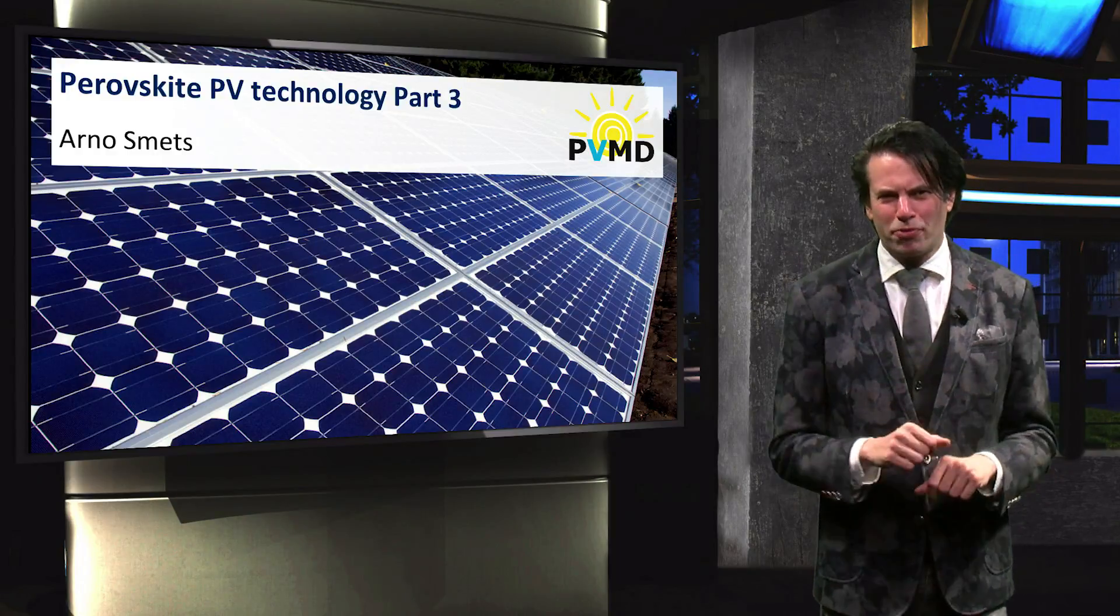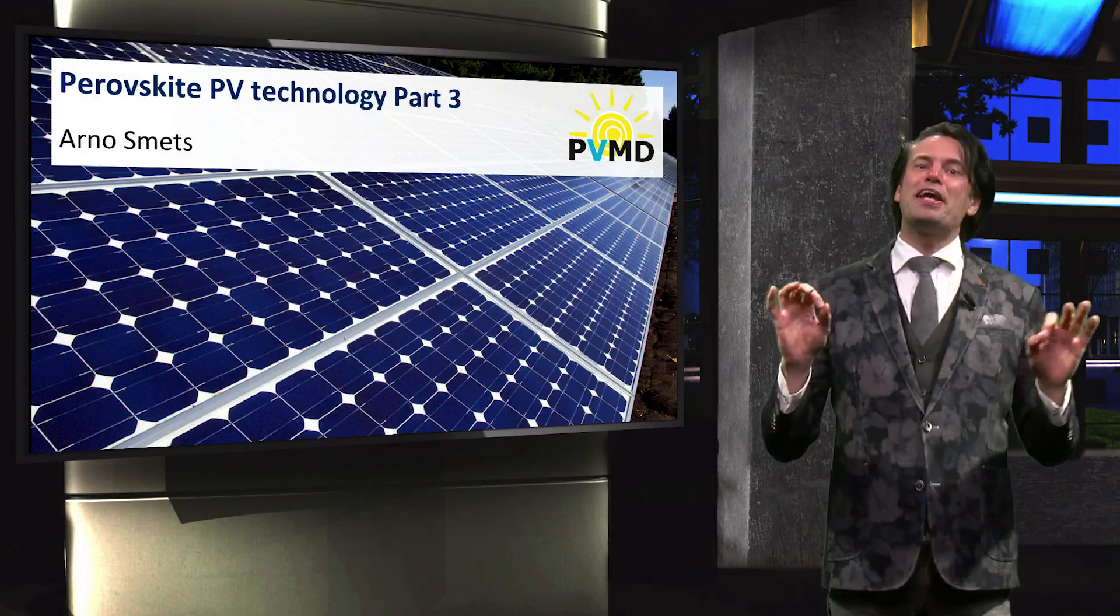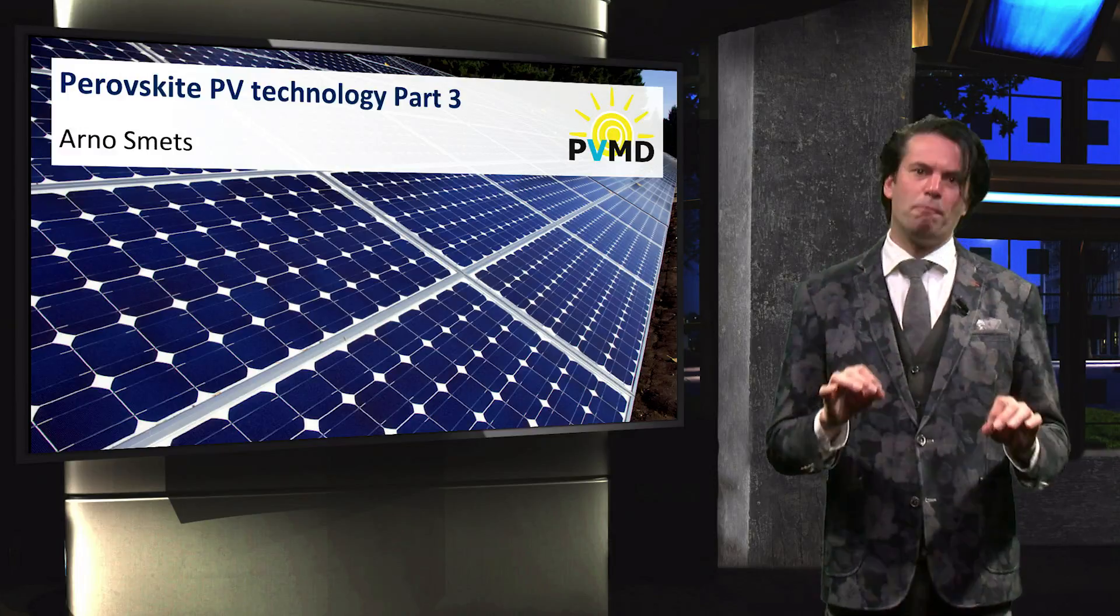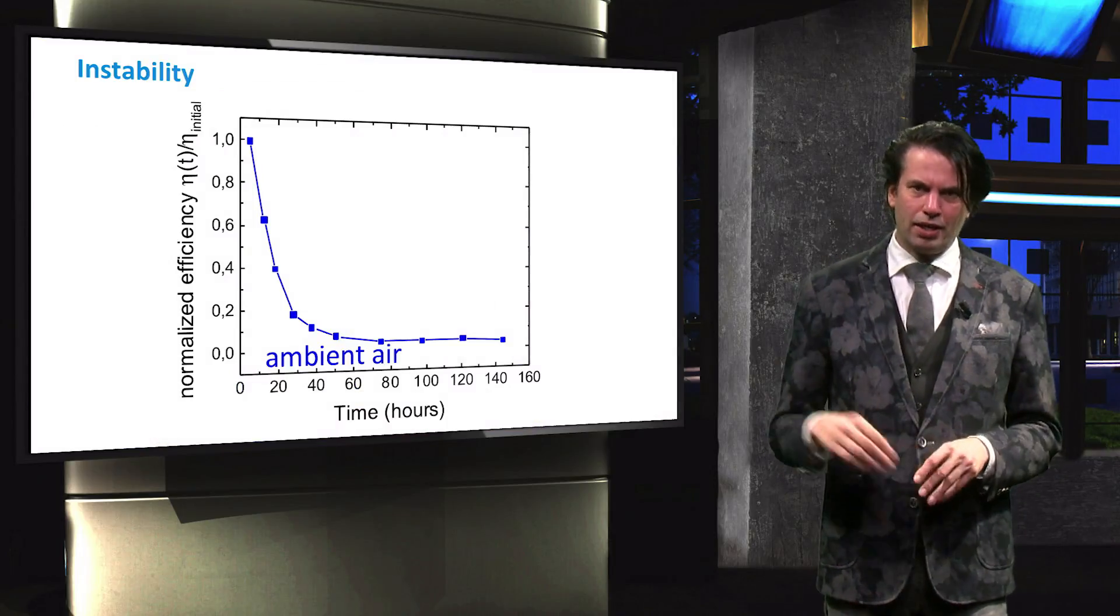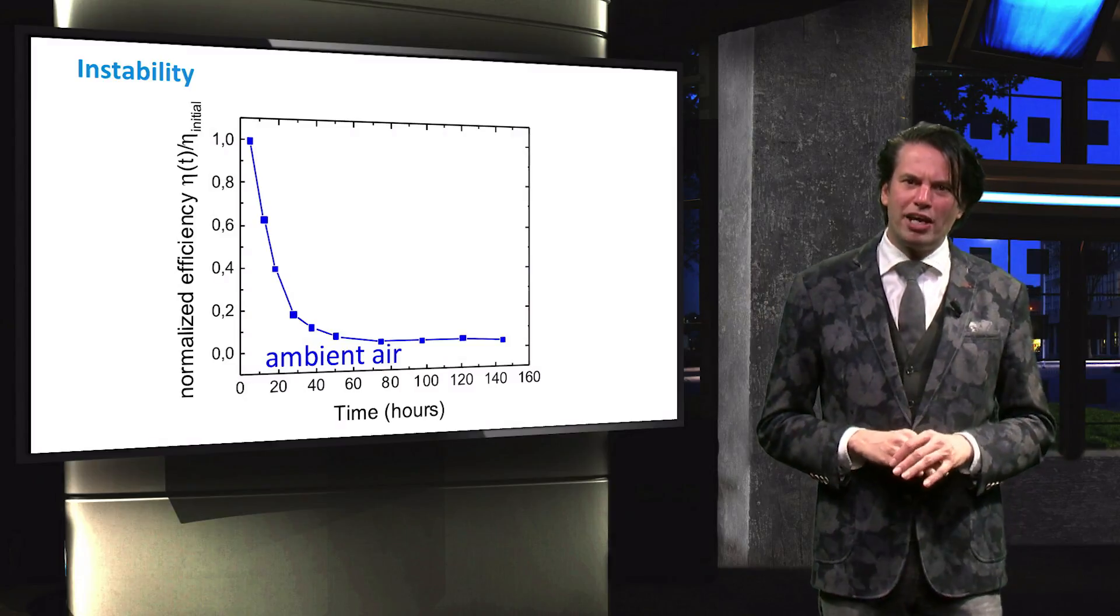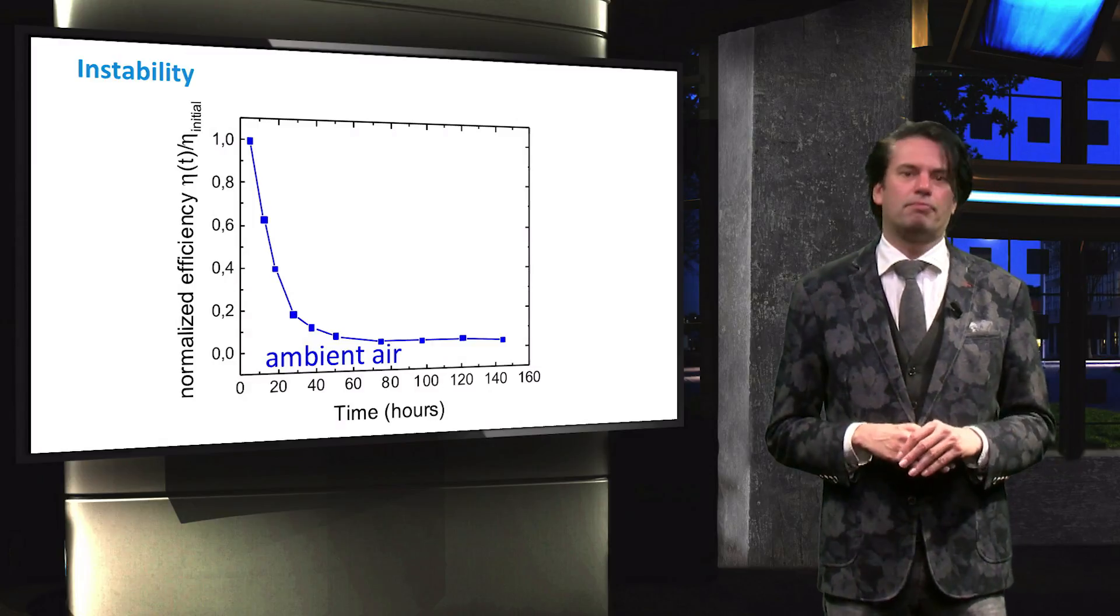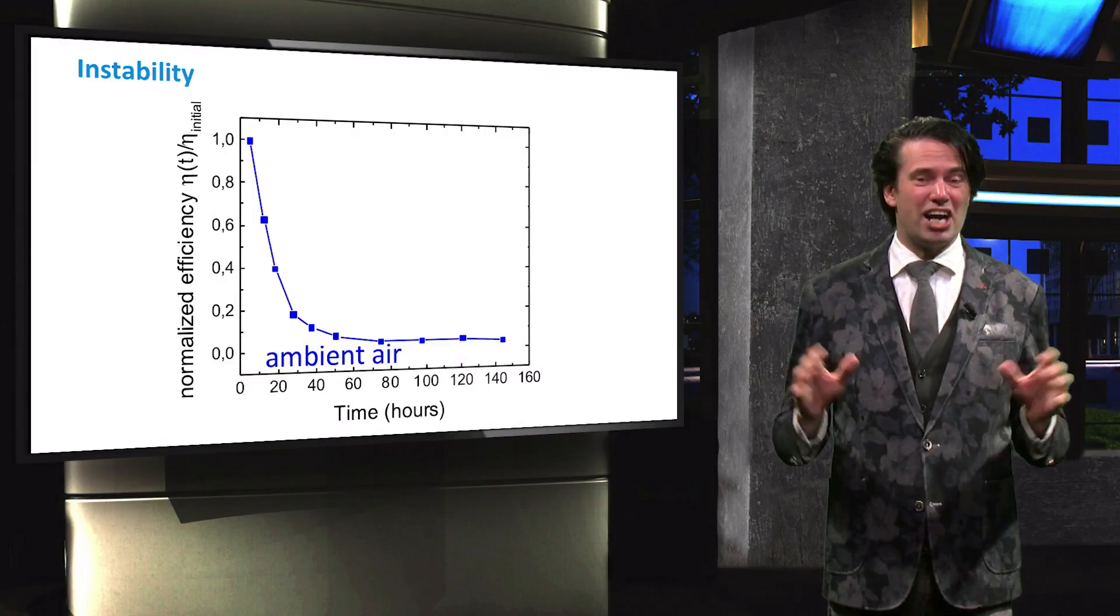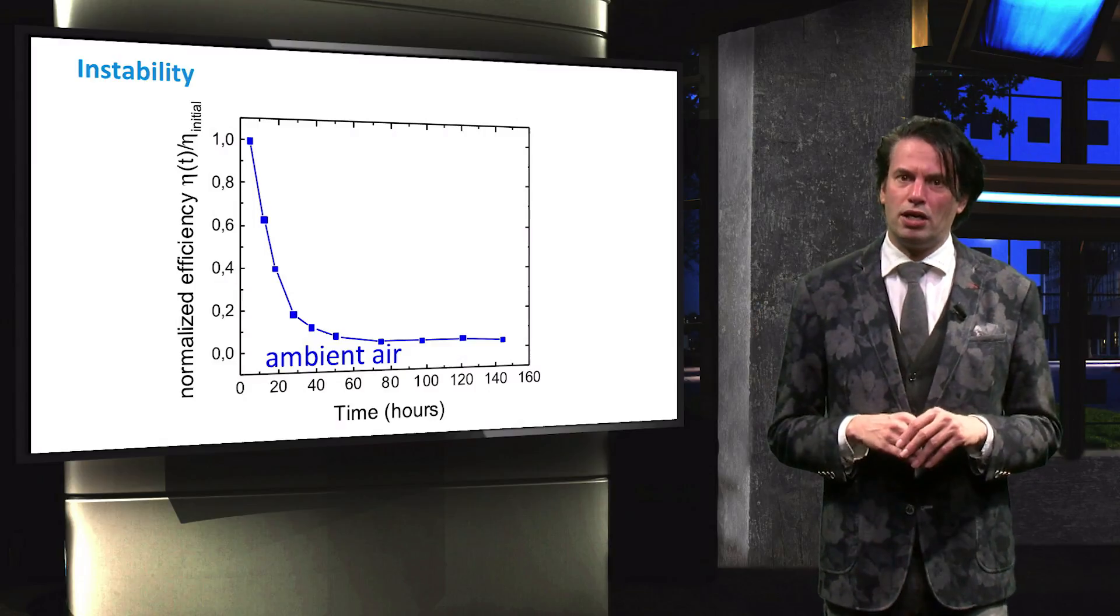Welcome back to the videos on the perovskite PV technology. Another very important challenge is that perovskite solar cells suffer from degradation of the performance in time. This graph shows the normalized performance of a typical perovskite solar cell in ambient air in time. The efficiency almost drops to 0% in only 40 hours. This effect cannot be reversed with a thermal anneal.